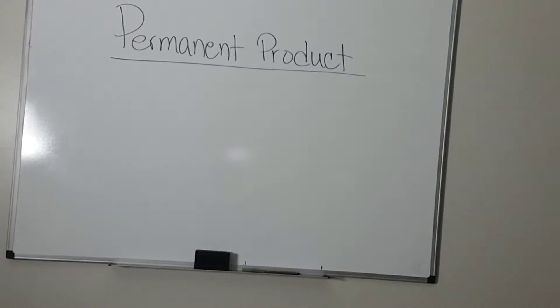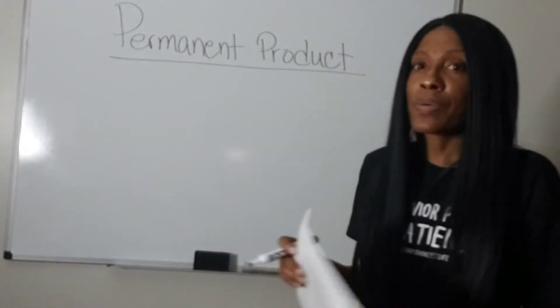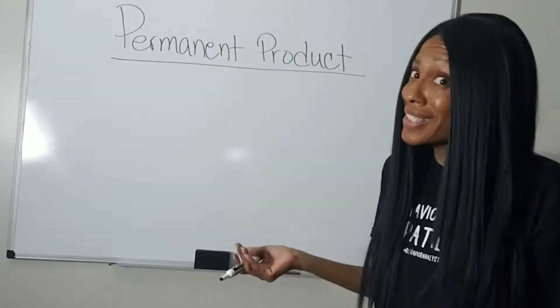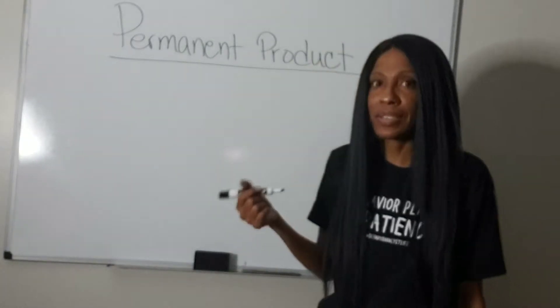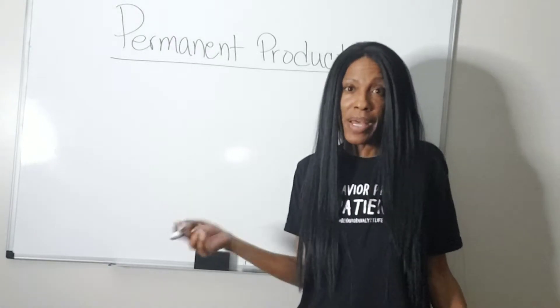Welcome back. We're talking about another discontinuous measurement called permanent product. It's kind of what it says it is - you have a product. A product is an item or something that's produced, right? Left behind, something you can see.